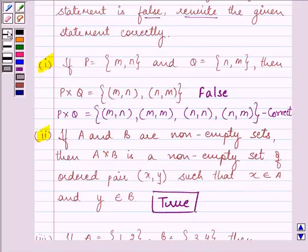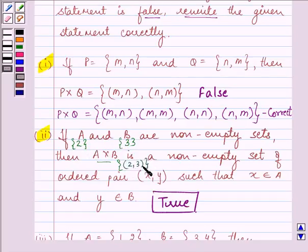Because we know that if A and B are non-empty sets and let us have their elements as 2, 3, let's say, and if we need to find out A cross B, the elements of A cross B will be ordered pairs with elements from both sets. And this is also a non-empty set where X belongs to A and Y belongs to B. So that is why this is a true statement.